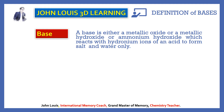What are some examples of metallic oxide? Any metal combined with oxygen is known as a metallic oxide. For example, copper(II) oxide is CuO, magnesium oxide is MgO, and calcium oxide is CaO. These are all examples of metallic oxides.